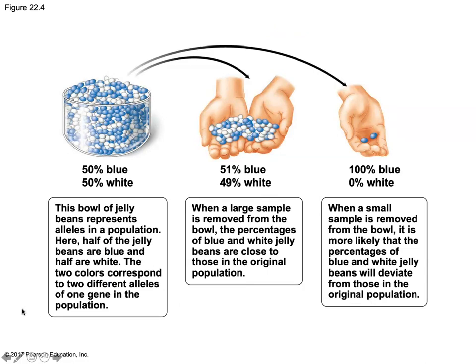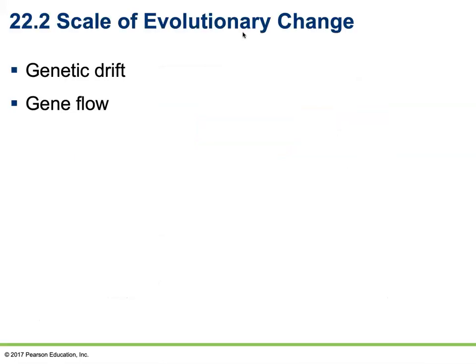Here's an example of how genetic drift has greater effects in small populations. A bowl of jelly beans represents the alleles in a population — half are blue and half are white, corresponding to two different alleles of one gene. When a large sample is removed from the bowl, the percentages of blue and white jelly beans are close to those of the original population. But if you only take two or three jelly beans, you're much more likely to get percentages that deviate from the original population, showing a dramatic change in allele frequency.